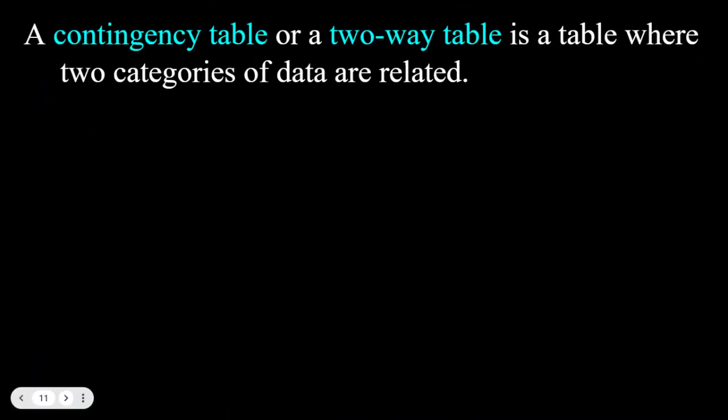By definition, a contingency table or a two-way table is a table where two categories of data are related.